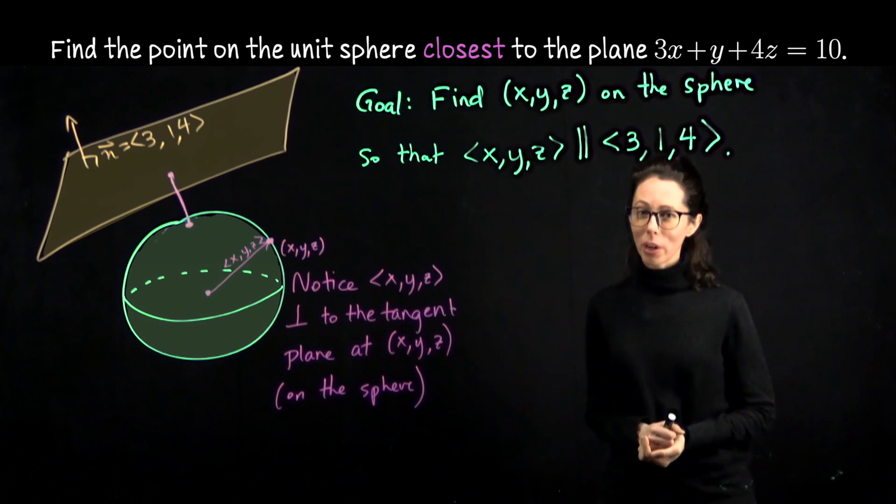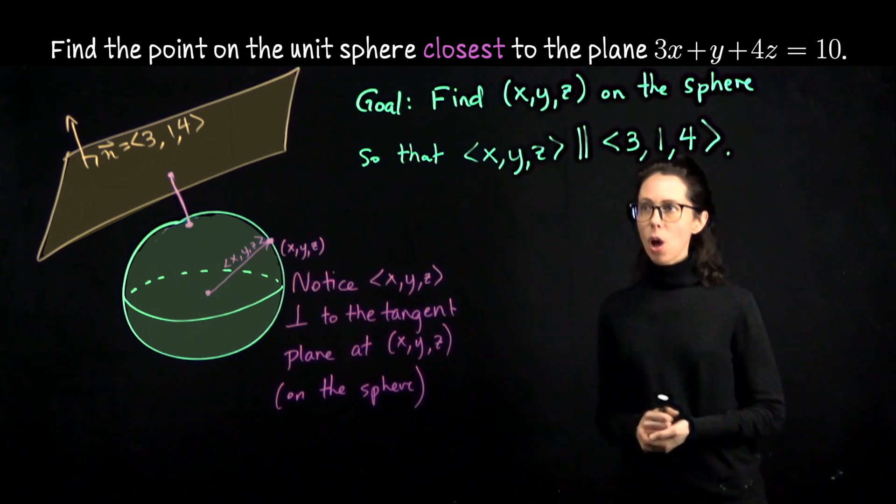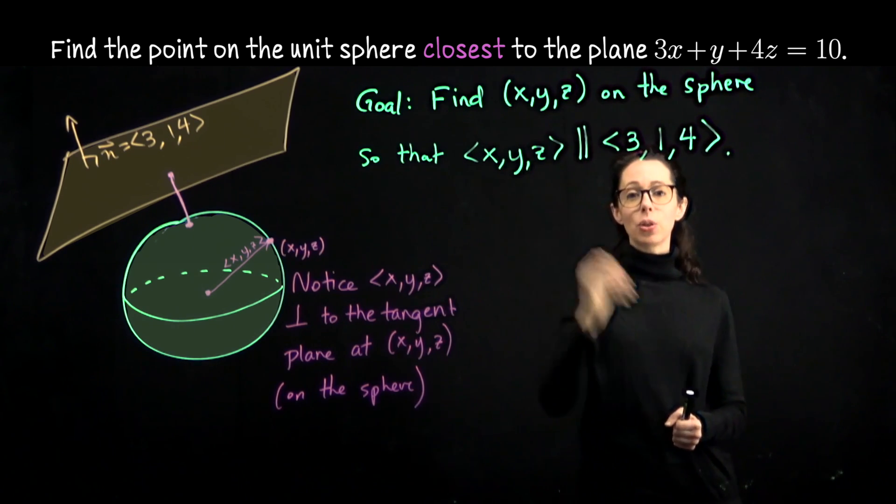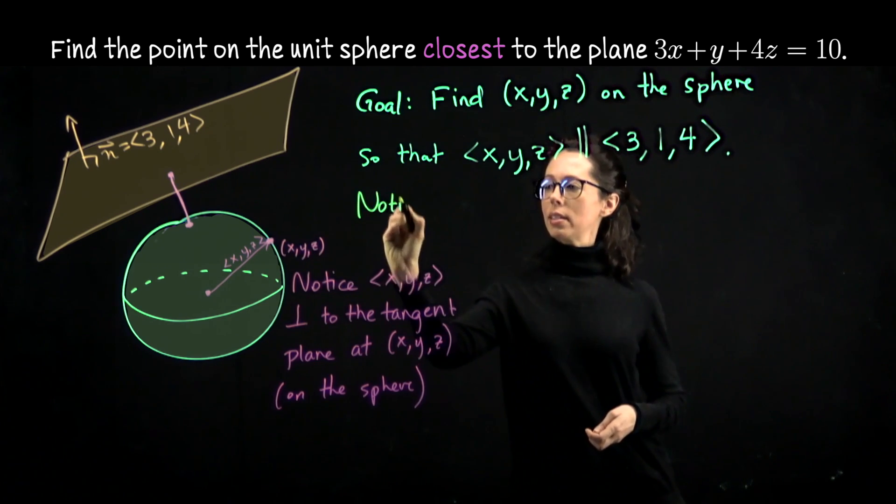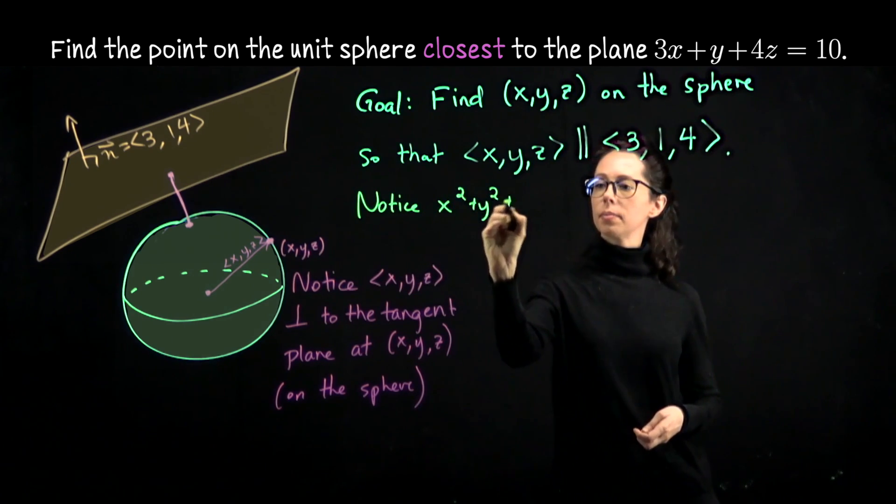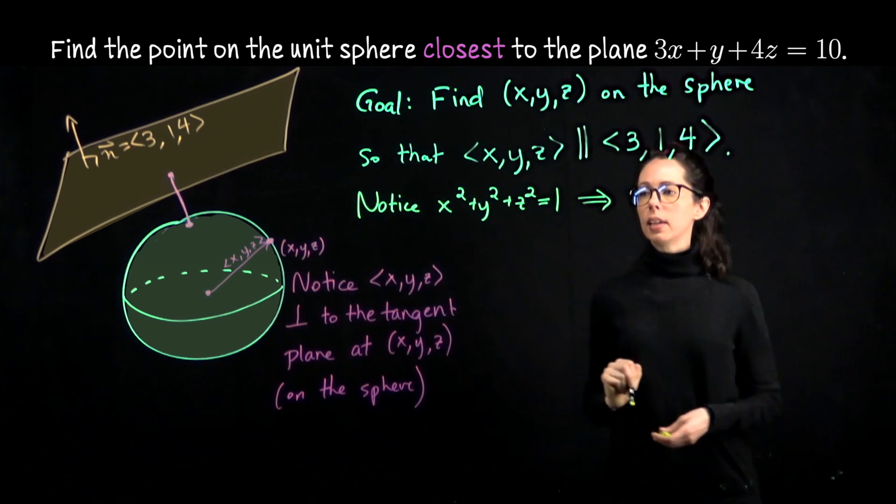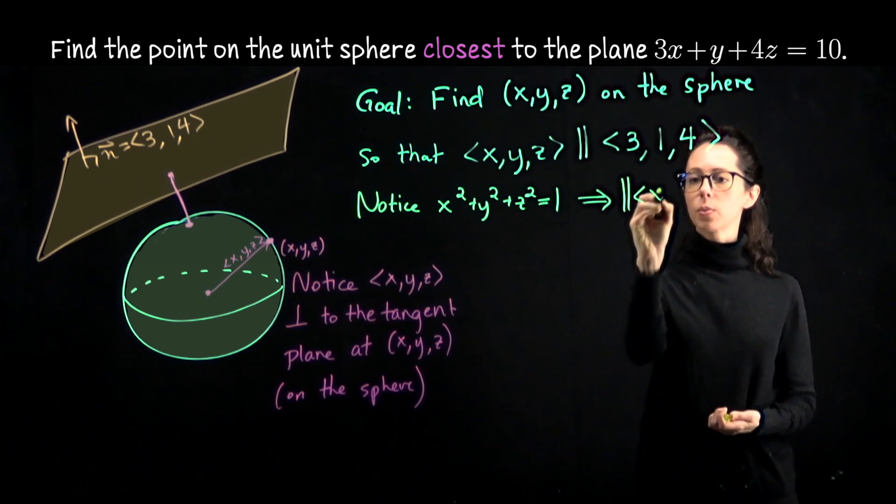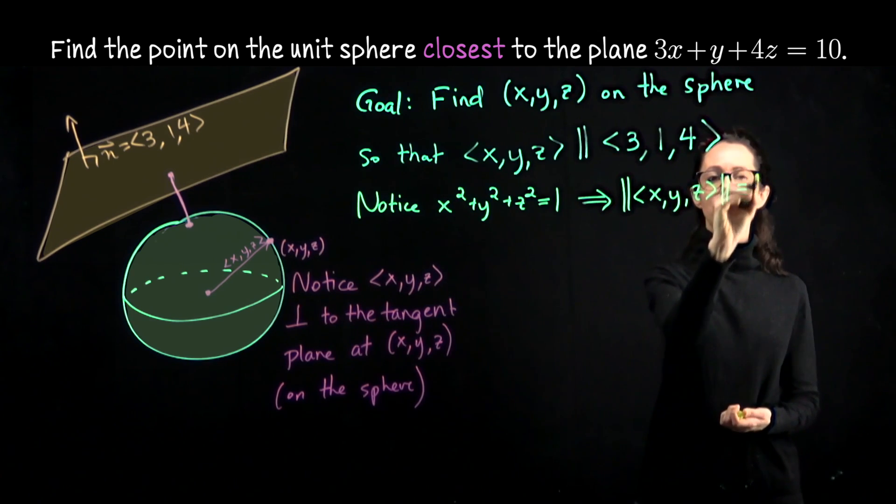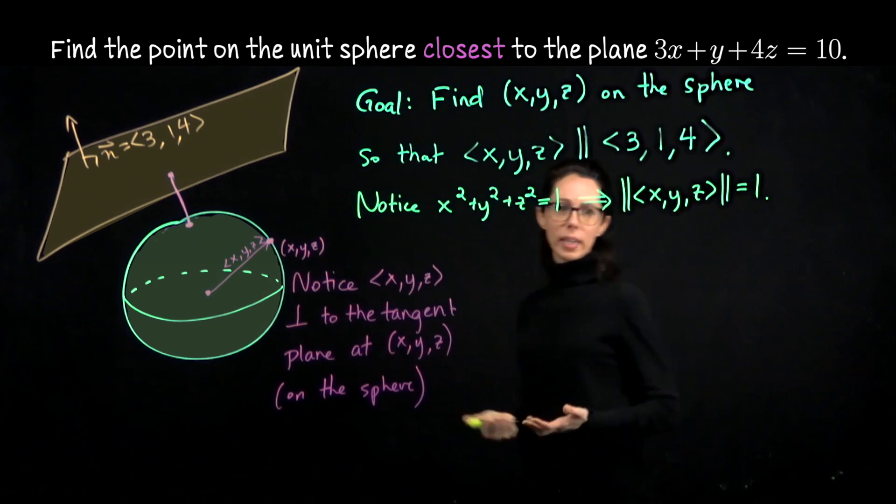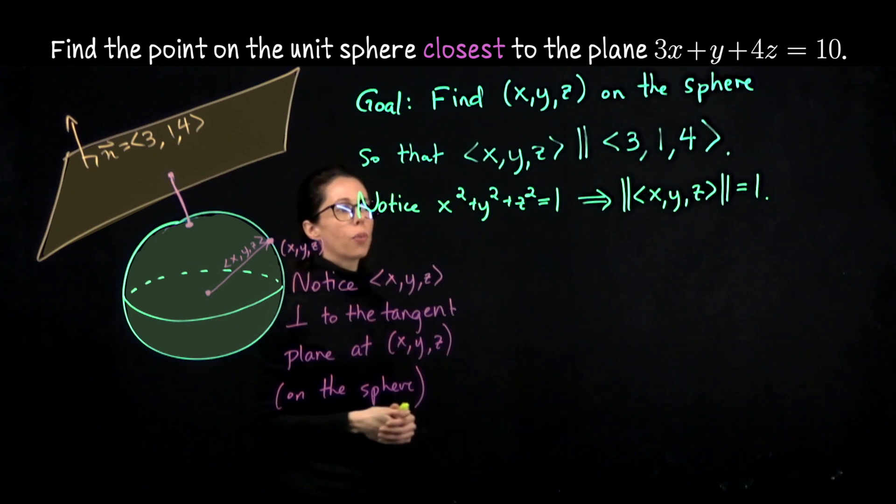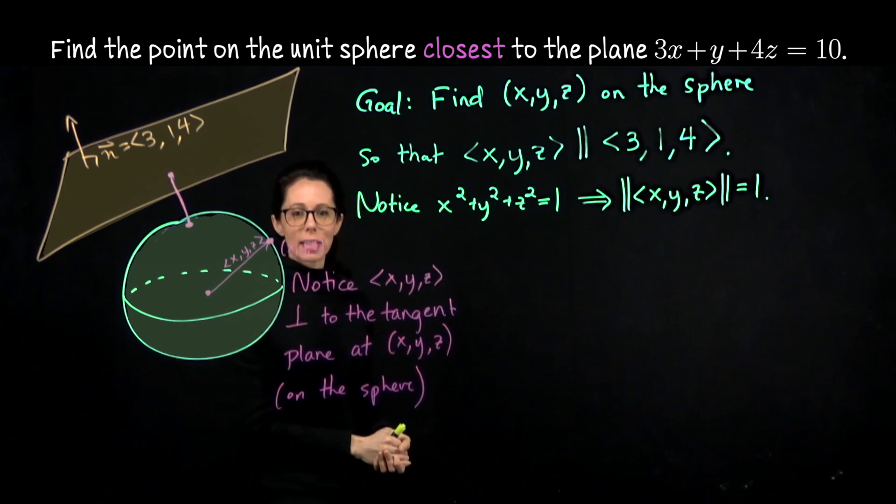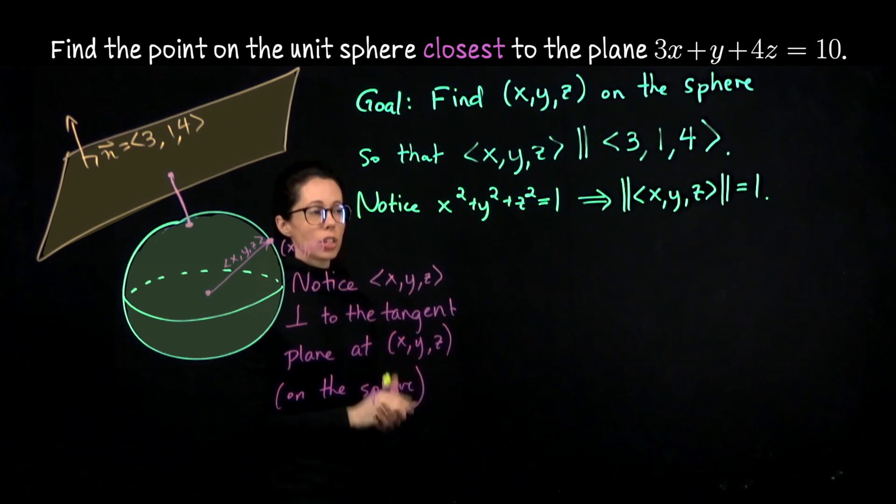Since we're working on a sphere, not just any sphere, the unit sphere, we know that x squared plus y squared plus z squared equals 1, which means that this vector x, y, z is unit length. We need a unit length vector parallel to the vector 3, 1, 4. What we want to do is take 3, 1, 4 and normalize it, if you will, divide it by its magnitude so that it becomes a unit length vector. We found a unit length vector parallel to it.